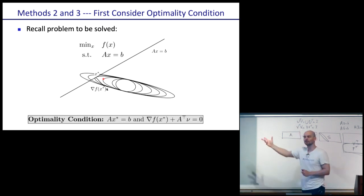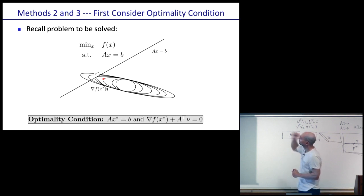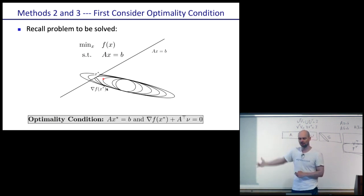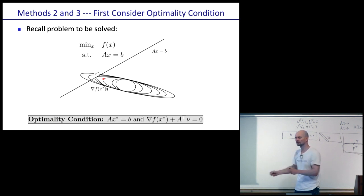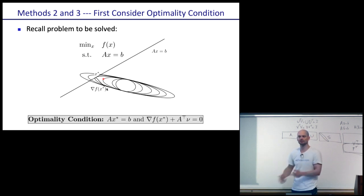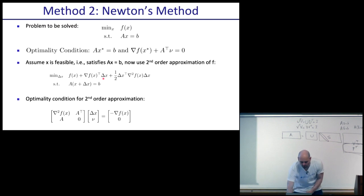Even though in general you cannot solve the optimality condition exactly, if your problem is a second-order optimization problem you can solve it exactly. So we turn it into a second-order problem, solve it exactly, and repeat. If we start feasible, everything stays feasible at every step; if we start infeasible, it gradually moves toward feasibility.